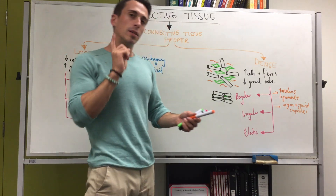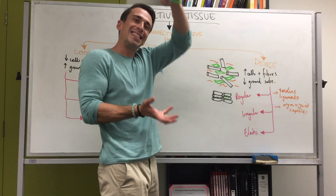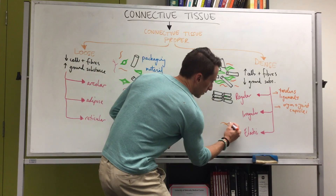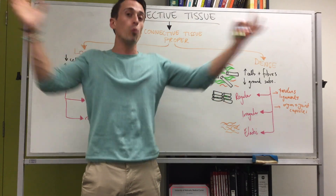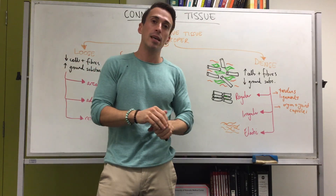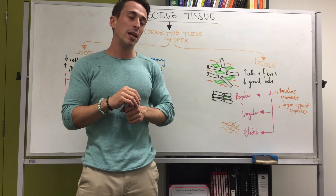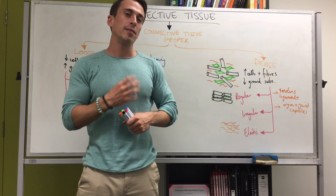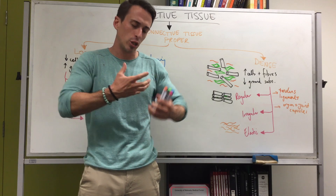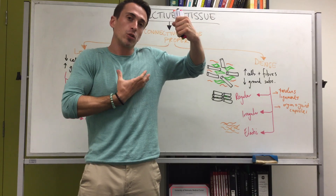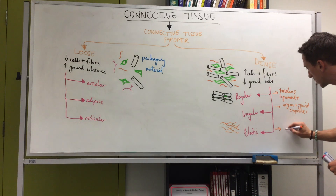Dense elastic connective tissue is predominantly elastic fibers rather than collagenous fibers, densely packed. This is because it needs to stretch and then recoil repeatedly. Dense elastic connective tissue is found in structures such as the aorta — the main artery from the left ventricle — which is under great pressure. When the heart contracts at around 120 mmHg, the aorta distends, and when the ventricle relaxes it recoils back.